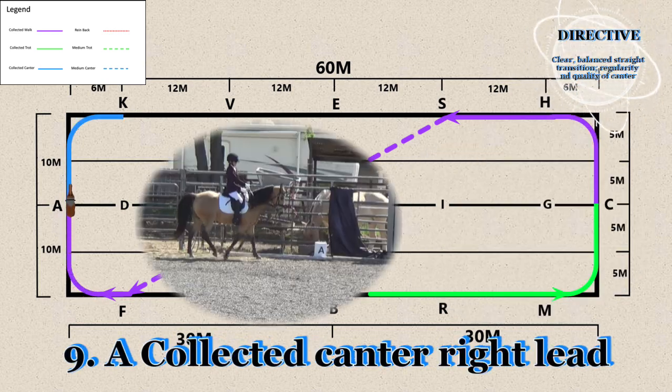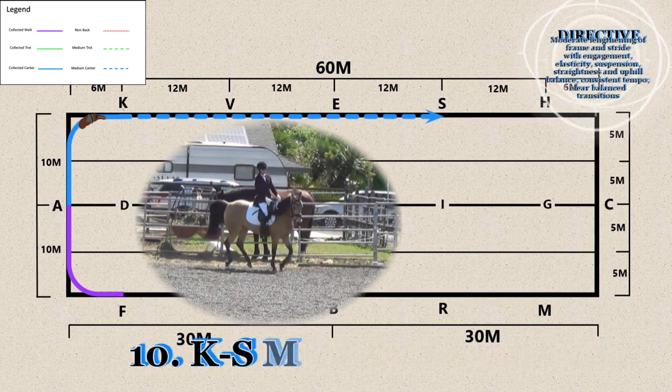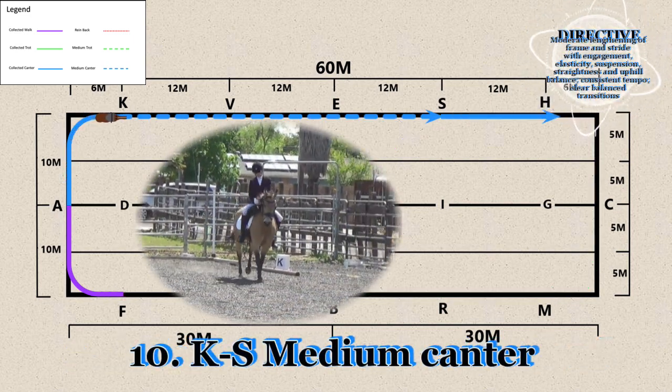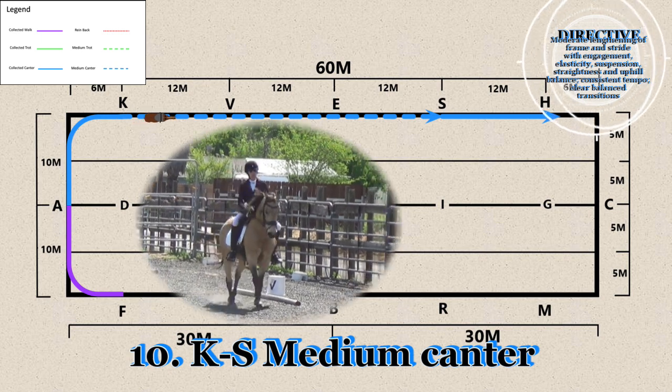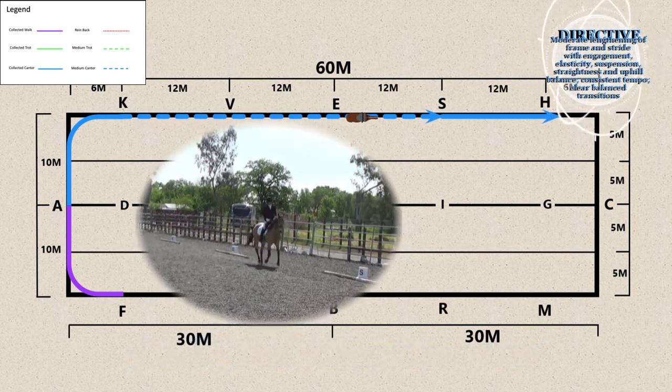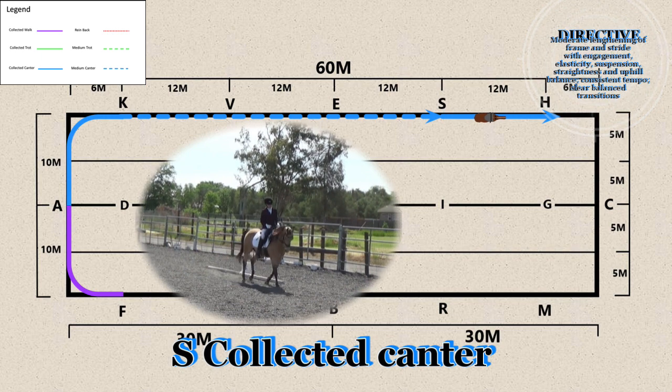Right lead. 10. K through S - Medium canter. S - Collected canter.